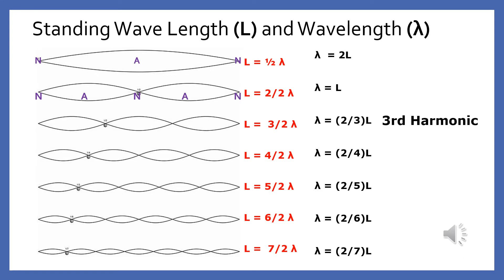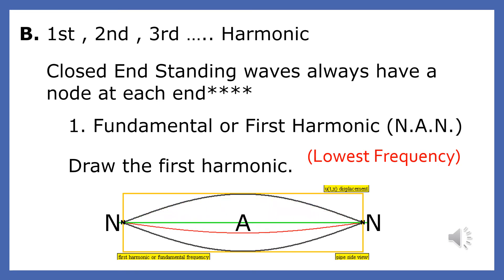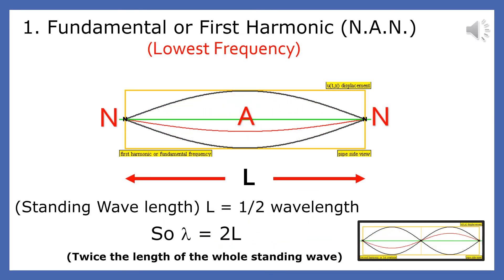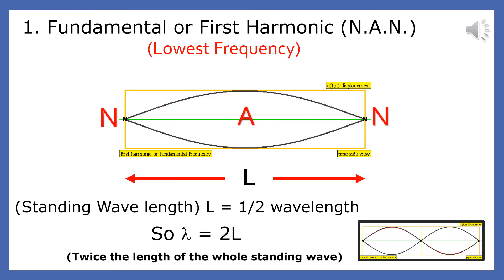Now let's look at a standing wave produced by a frequency that is three times the fundamental frequency. This is called the third harmonic. The third harmonic produces one and a half wavelengths. When we solve for lambda, we find the wavelength is two-thirds of the standing wave, or two-thirds of L. The lowest frequency standing wave that can be produced by a given length is called the fundamental frequency. Since we are discussing standing waves closed at both ends, the lowest frequency standing wave has a node at both ends and an antinode in the middle. Since a standing wave that is one wavelength wide has two antinodes and this standing wave has one, this standing wave must be a half a wavelength long. Since the length of the standing wave is L, then the wavelength of this wave must be 2L.